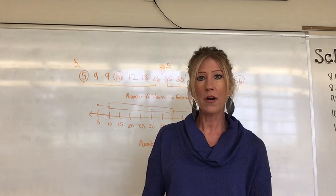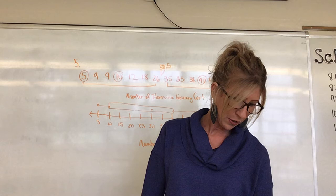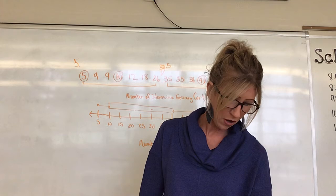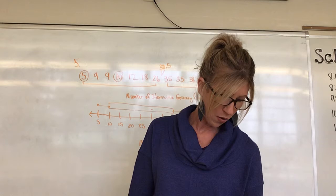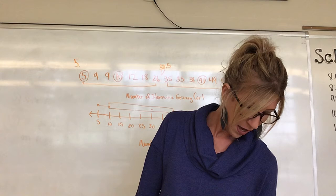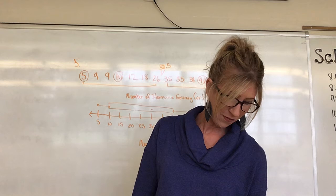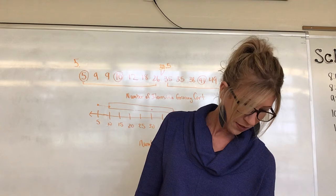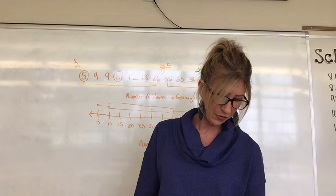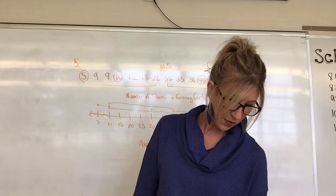Okay, pretending we paused. Number eight says the box and whisker plot represents the cost of a large cheese pizza at 12 different pizzerias. Look at the title: cost of large pizza — and below it shows dollars. From the box plot we can read the five key values: least is 8, lower quartile is 10, median is 10.50 — between 10 and 11 dollars — upper quartile is 14.50, and the greatest is 16.